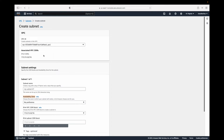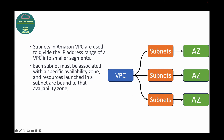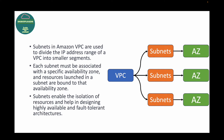Subnets enable the isolation of resources and help in designing highly available and fault-tolerant architectures. Whenever we're launching our instances or databases we'll need to specify in which subnet and which availability zone we want to create the resources — that way your resources are isolated. For example, an instance running in one subnet and another in a different subnet are two isolated resources, which enables high availability and fault tolerance.